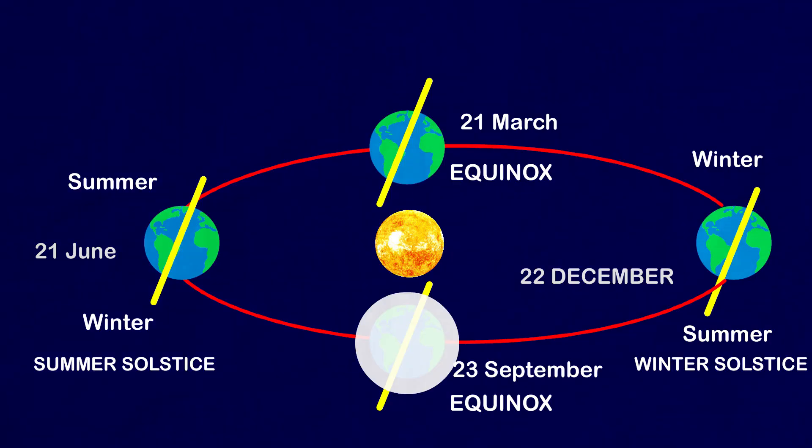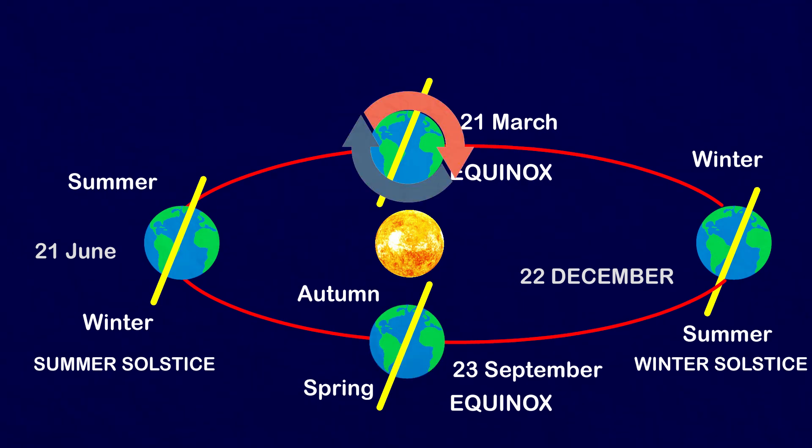On 23rd September, it is autumn season in the northern hemisphere and spring season in the southern hemisphere. The opposite is the case on 21st March, when it is spring in the northern hemisphere and autumn in the southern hemisphere.